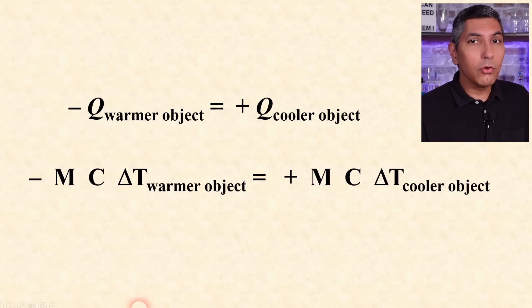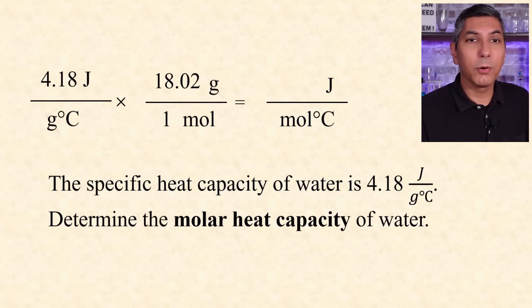Also, we usually compute specific heat capacity in joules per gram degree Celsius, but we can also express it in joules per mole degree Celsius by simply converting grams of the material to moles, like this.